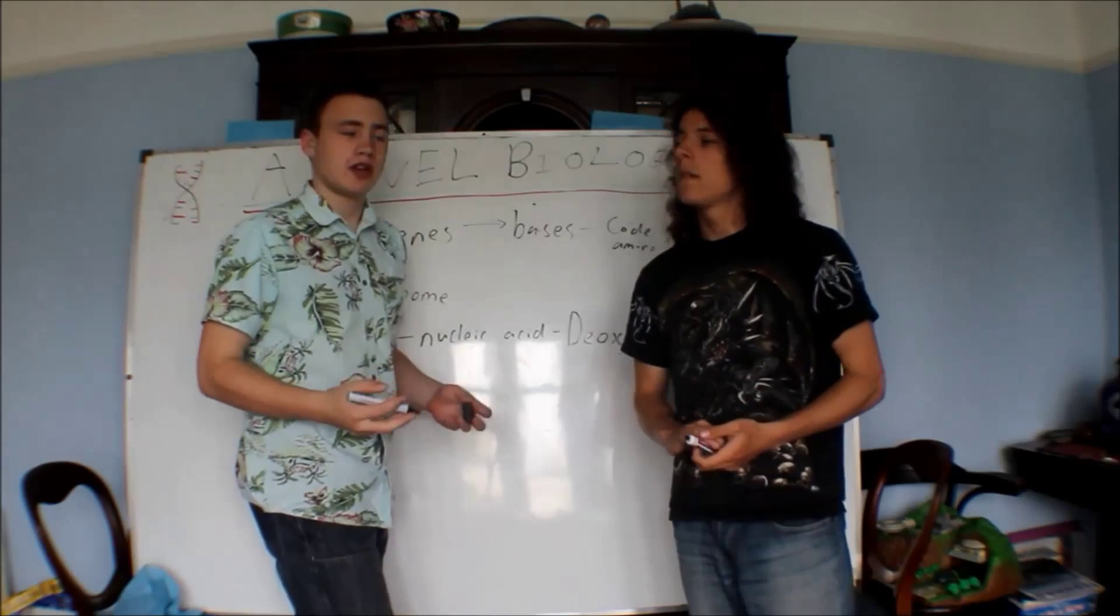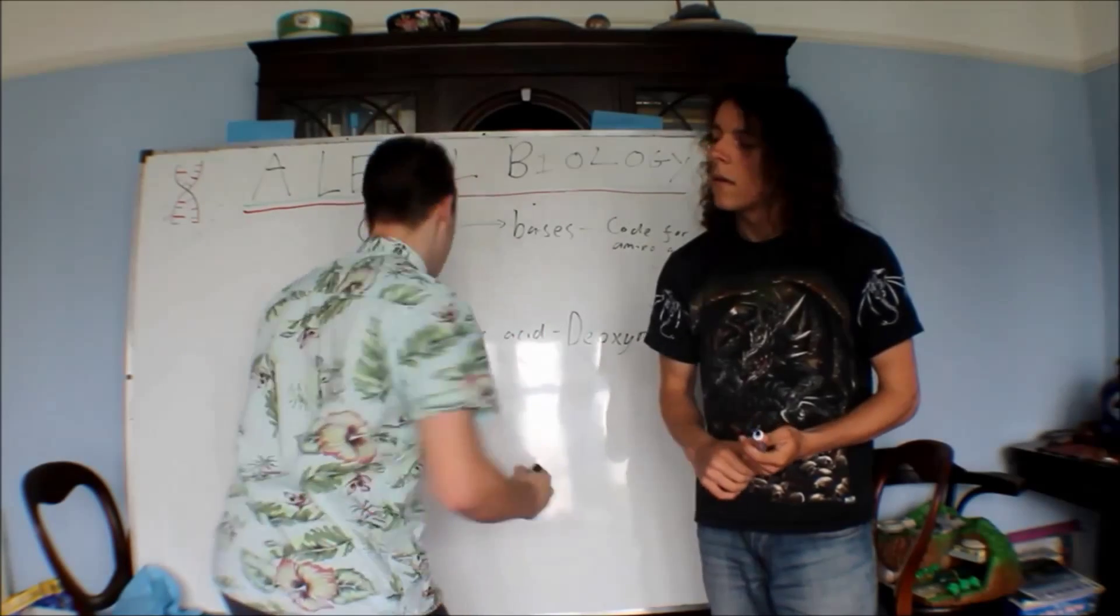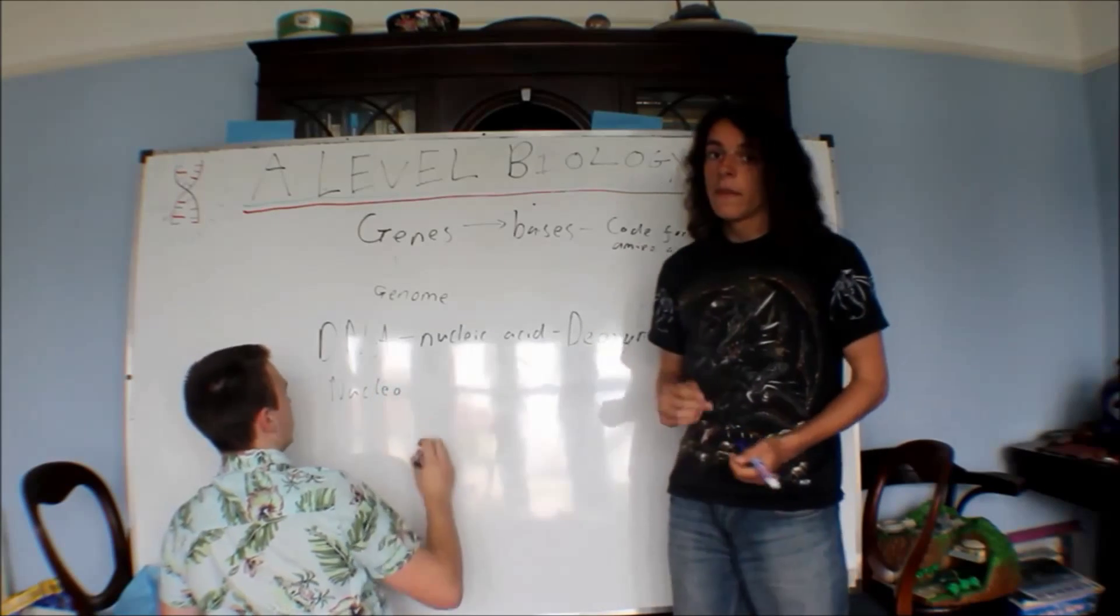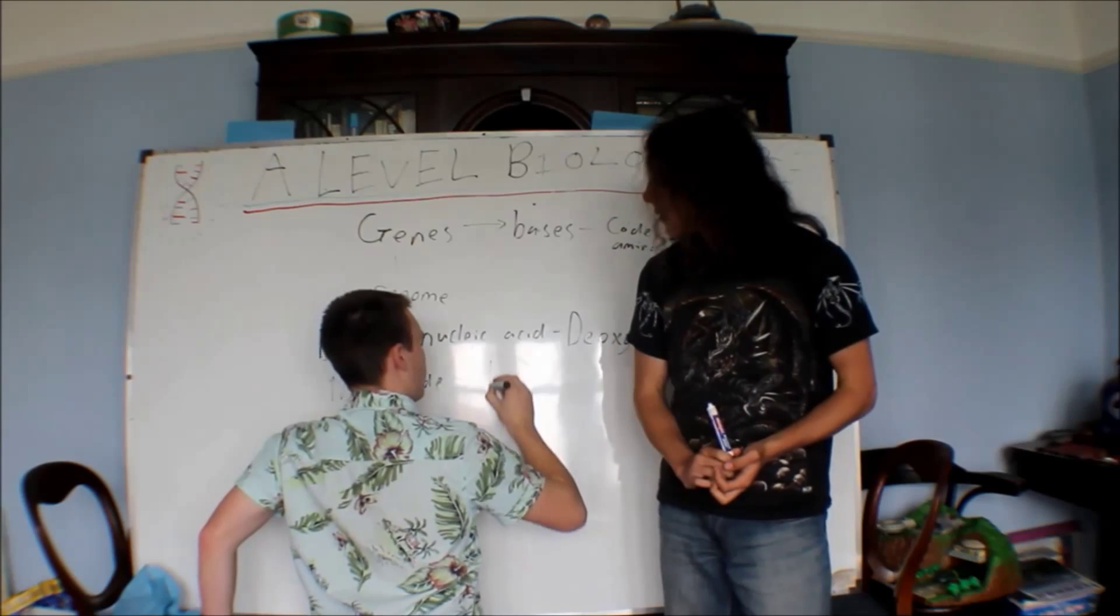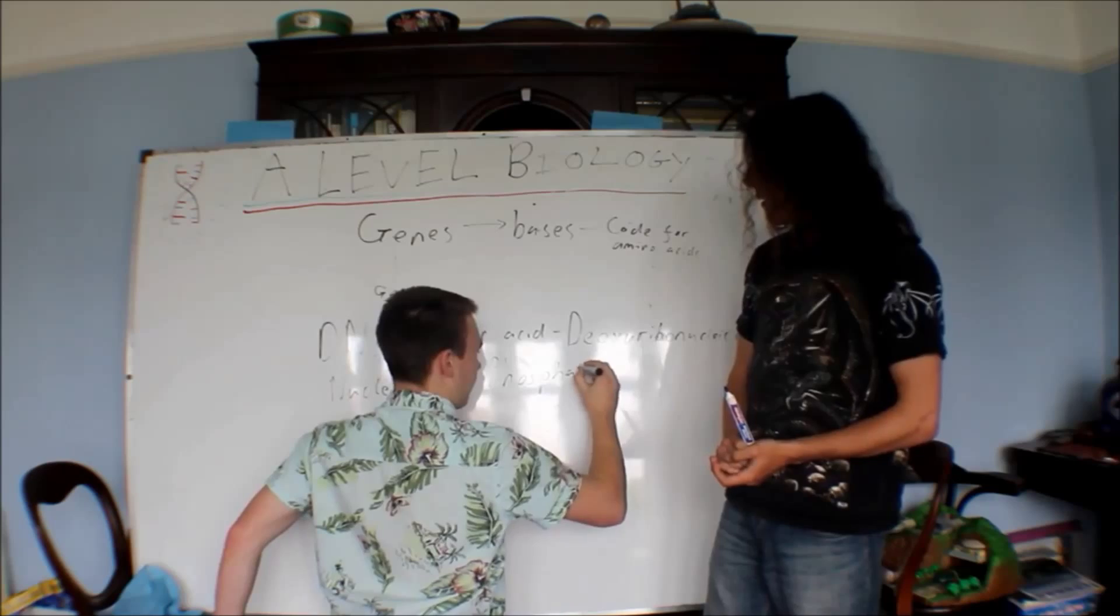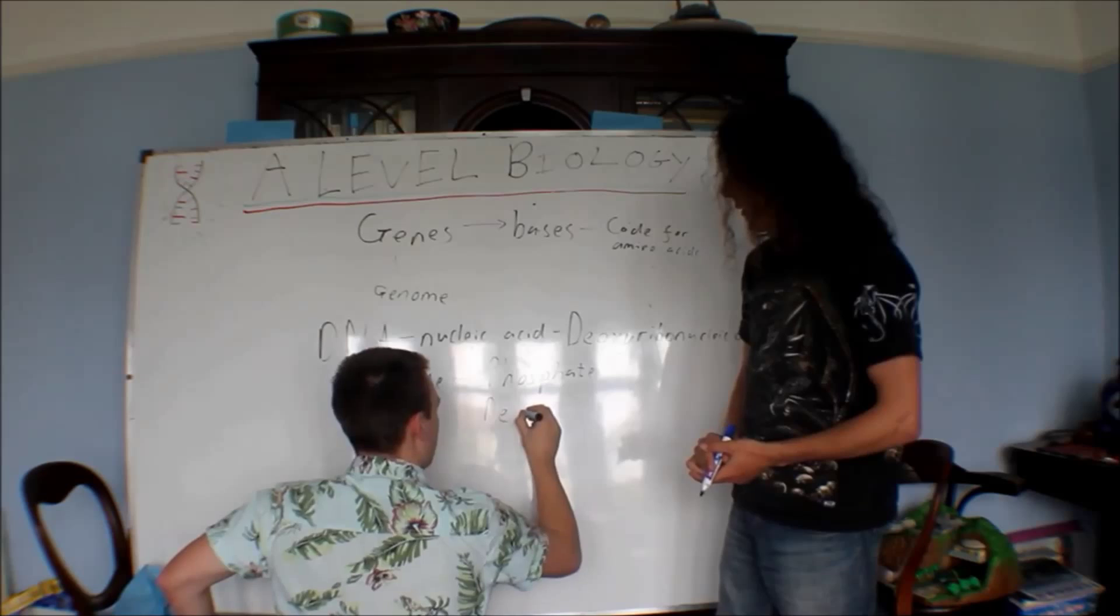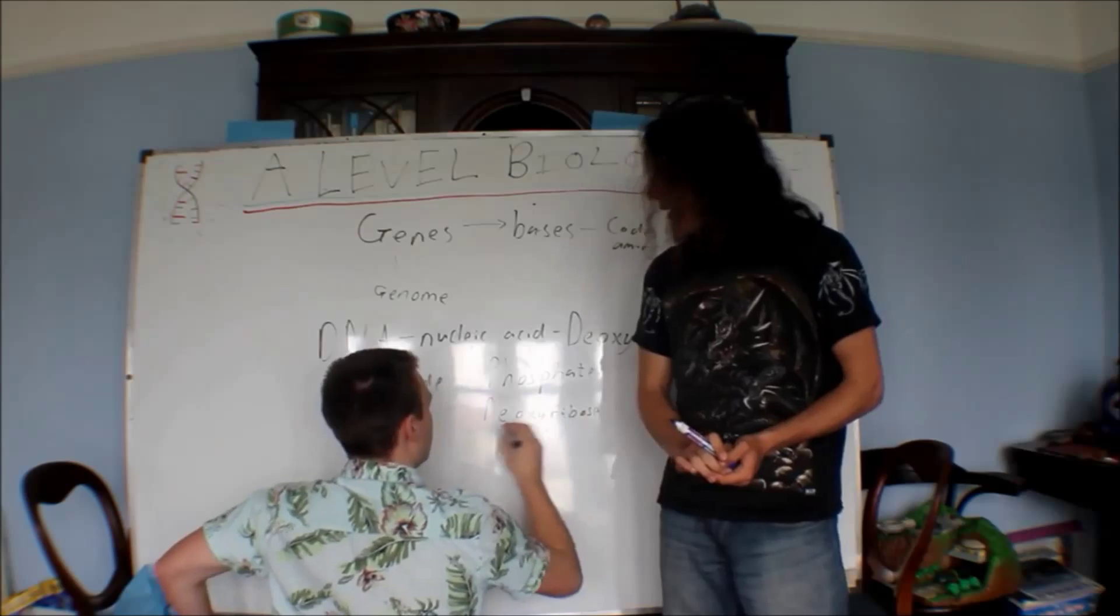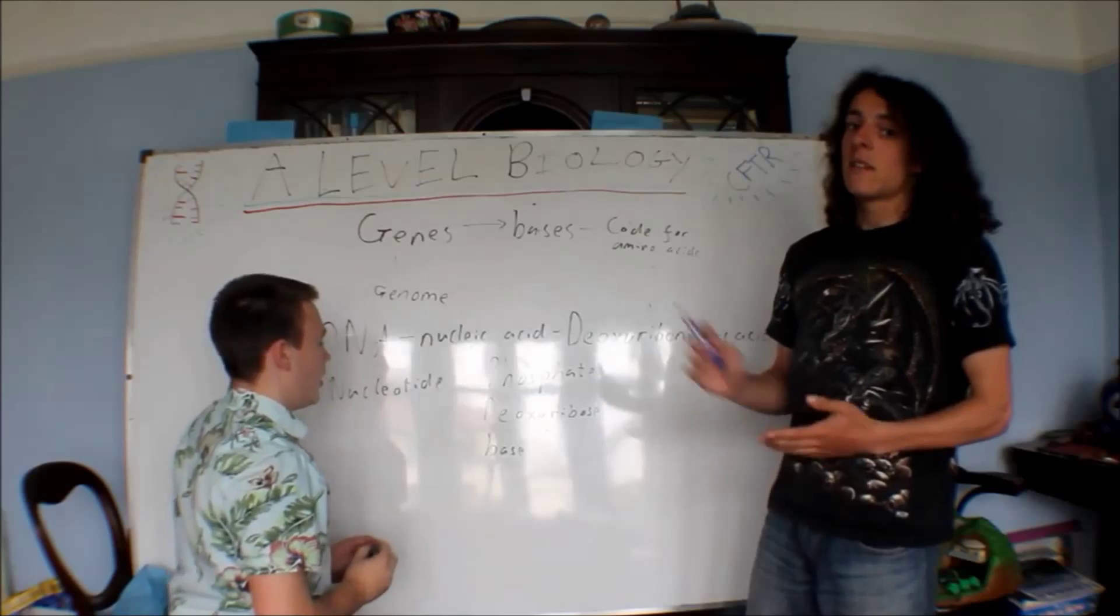Nucleic acid is made up of something called nucleotides, or you could call them mononucleotides, but you don't need to, it's just one nucleotide. And it's made up of this deoxyribose sugar, a phosphate group, and a base. So I'll put that down, we've got a phosphate group, the deoxyribose sugar, and a base.